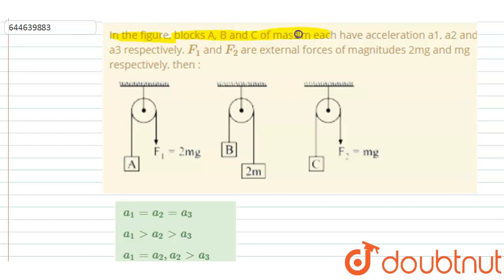Hello everyone. In the figure, blocks A, B, and C of mass m each have acceleration a1, a2, and a3 respectively. F1 and F2 are external forces of magnitude 2mg and mg respectively.